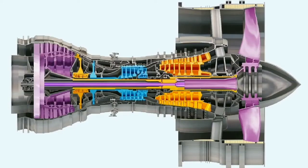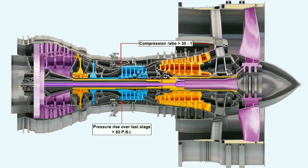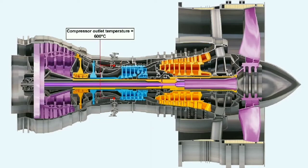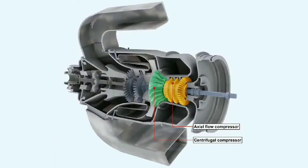In larger, more modern engines, compressors may consist of up to three spools. In an engine like the Rolls-Royce Trent, compression ratios in excess of 35 to 1 can be attained, and the pressure rise over the last stage may be greater than 80 pounds per square inch. The high pressures generated can result in compressor outlet temperatures of up to 600 degrees Celsius. Some lower-powered engines also use a combination of centrifugal and axial compressors.